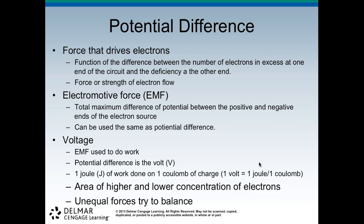Potential difference is the force that drives electrons — it's a function of the difference between the number of electrons in excess at one end of the circuit and the deficiency at the other end. The electromotive force (EMF) is the total maximum difference of potential between the positive and negative ends of the electron source, and can be used interchangeably with potential difference. Voltage is the EMF used to do work; one volt equals one joule of work done on one coulomb of charge, so 1 V = 1 J / 1 C.